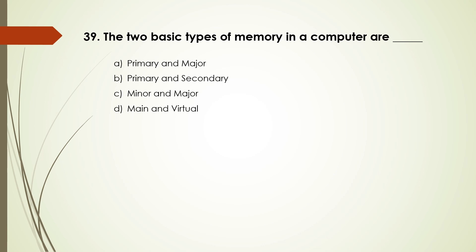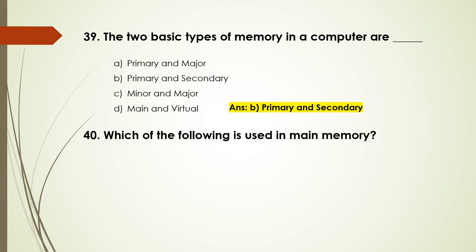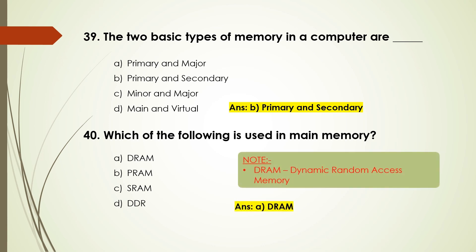Question number 39: The two types of memory are — options are: primary and major, primary and secondary, minor and major, main and virtual. The answer is B, primary and secondary. Question number 40: Which of the following is used in main memory? Options are: DRAM, PRAM, SRAM, DDR. The answer is A, DRAM.